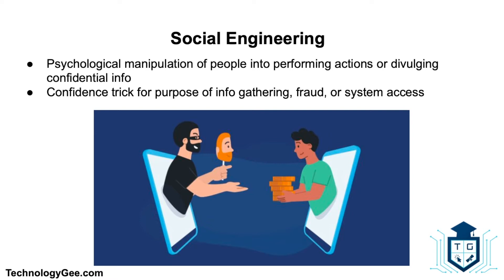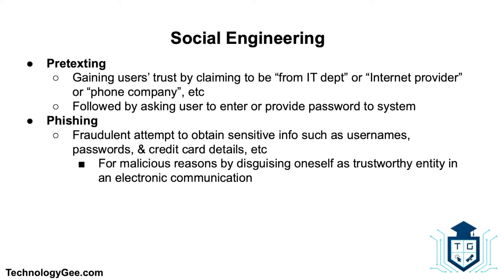Social engineering is the psychological manipulation of people into performing actions or divulging confidential information. This differs from social engineering within social sciences, which does not concern the type of confidence trick for the purpose of information gathering, fraud, or system access. It differs from a traditional con in that it is often one of many steps in a more complex fraud scheme.